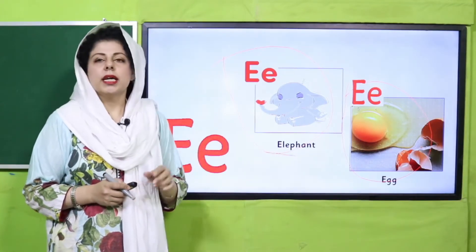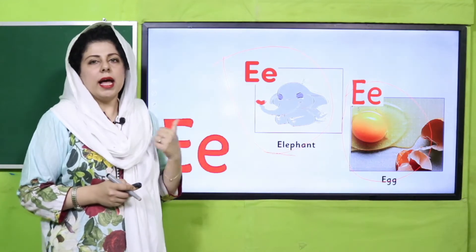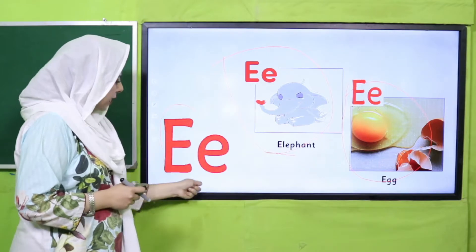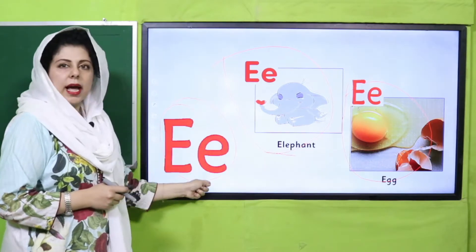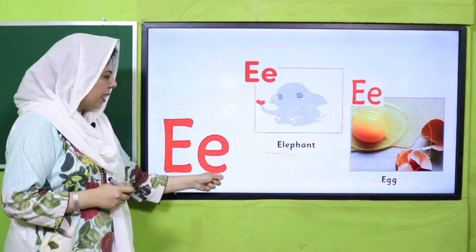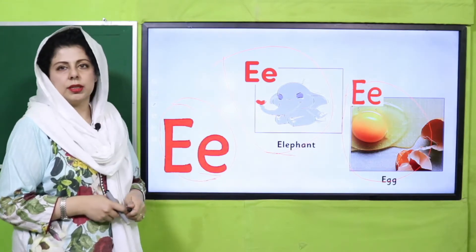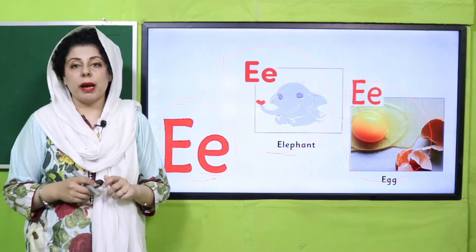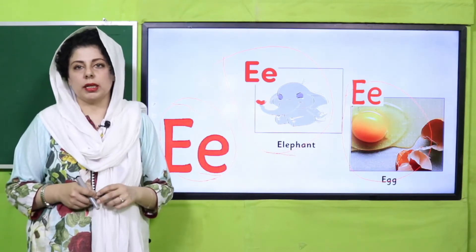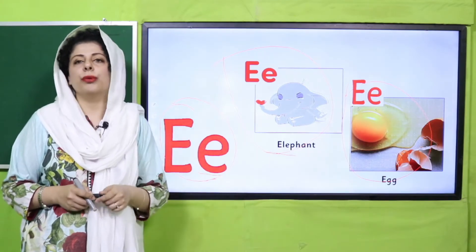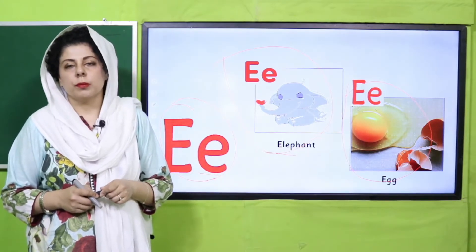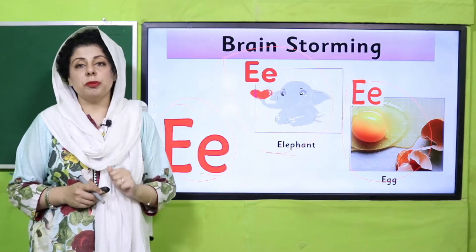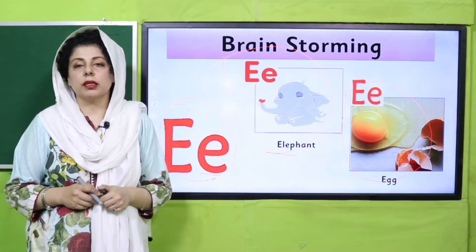Elephant, egg, elephant. This is the letter — you can see it on the screen. Egg, elephant. Dear teachers, this is the letter E, and this is the vocabulary for it. This is the original sound of the letter, so you can see the brainstorming activity which I have shared. Teachers who have flashcards or objects, you can use them.